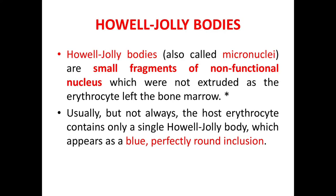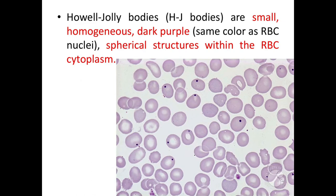Now we will see what Howell Jolly bodies are. These two types may be a little confusing, but we can distinguish between them because of their appearance. Howell Jolly bodies are also called micronuclei. They are small fragments of non-functional nucleus that were not extruded as the erythrocyte left the bone marrow. Usually the host erythrocyte contains only a single Howell Jolly body, which appears as a blue, perfectly round inclusion. They are small, homogeneous, dark purple, spherical structures within the RBC cytoplasm — remnants of RBC nuclei.